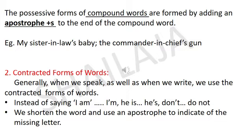Next: 'he is' — H-E apostrophe S — contracted form. Next: 'don't' is a contracted form of 'do not,' or the short form of 'do not.' So we shorten the word and use an apostrophe to indicate the missing letter.